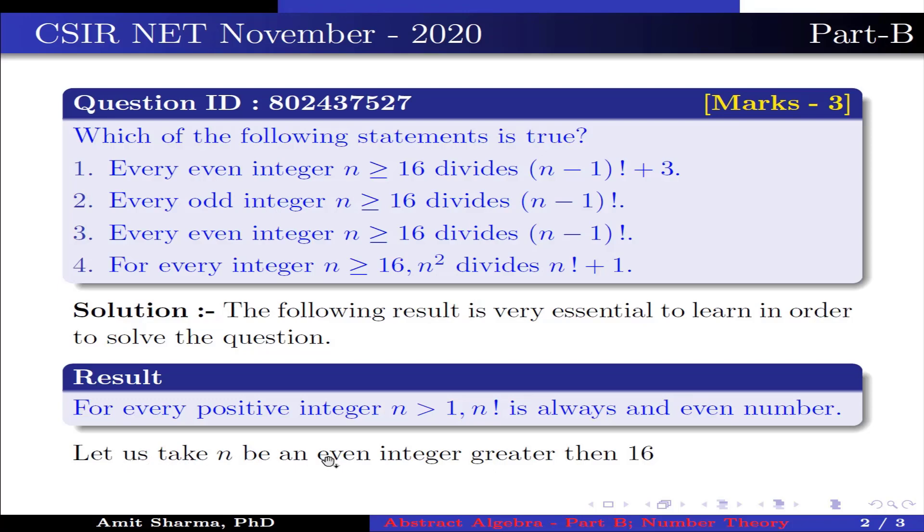Now, let us take n be an even integer greater than 16. This implies (n-1)! is an even integer. This implies (n-1)! + 3 is an odd integer because the sum of even and odd integer is an odd integer.